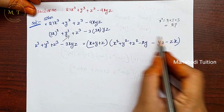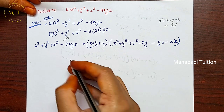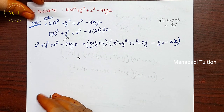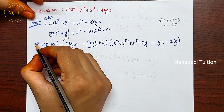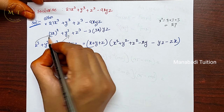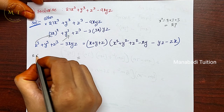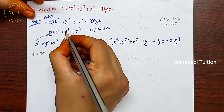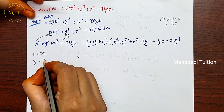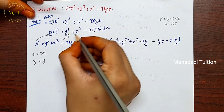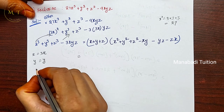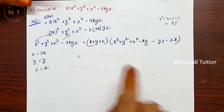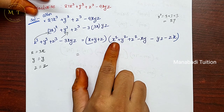We will substitute the values into the RHS. The x value is 3x, the y value is y, and the z value is z.